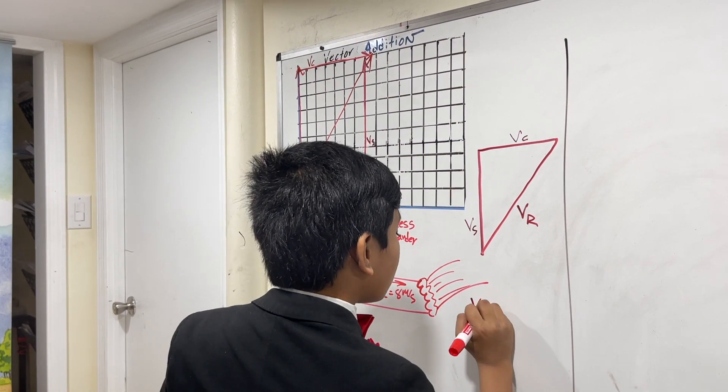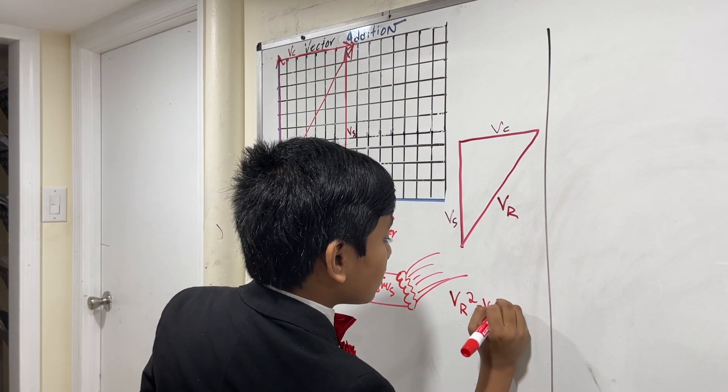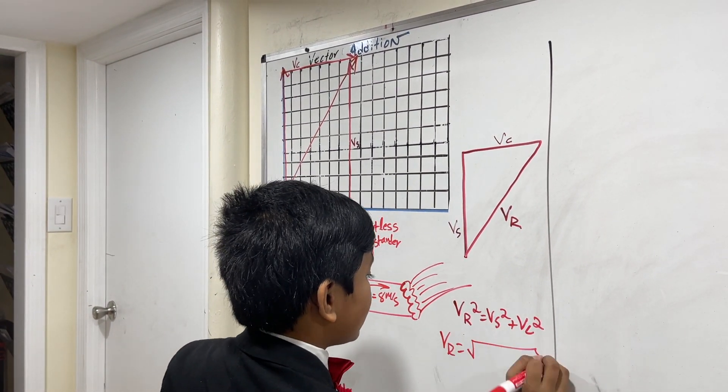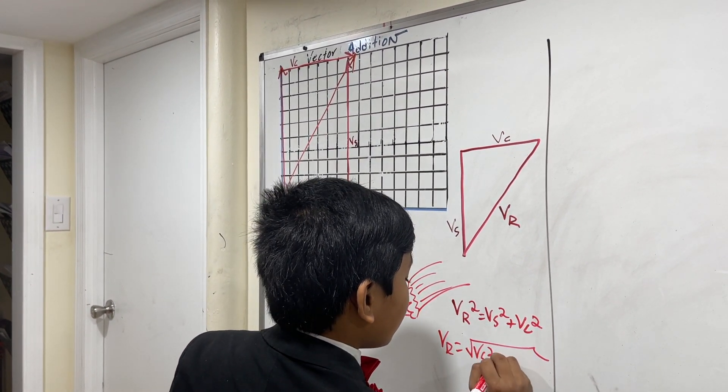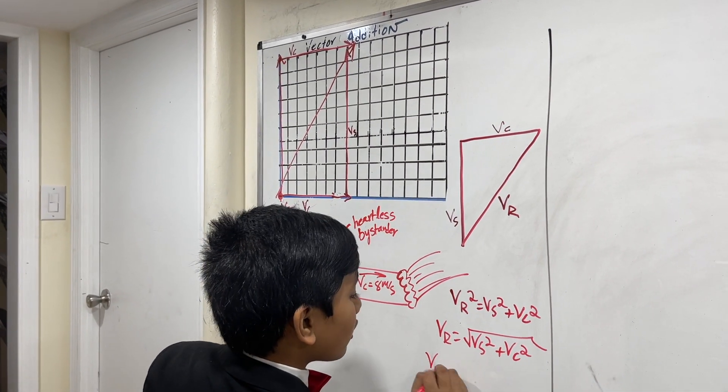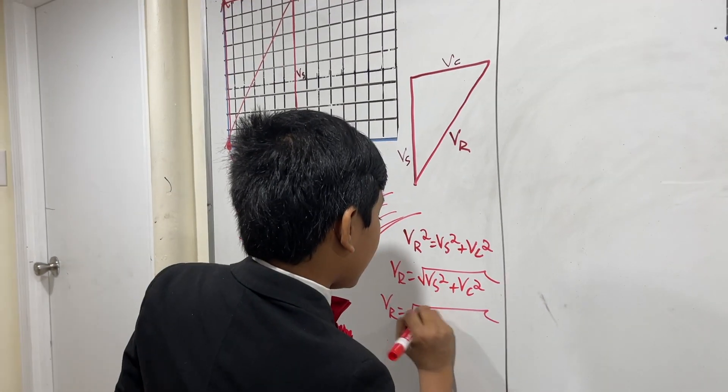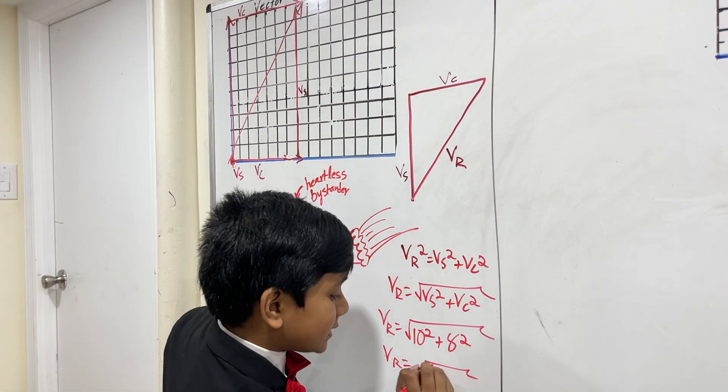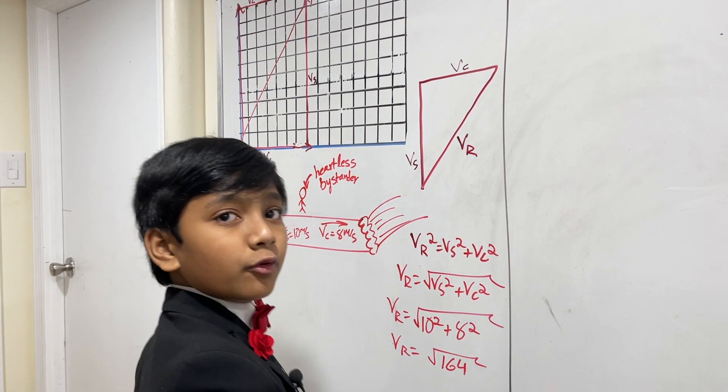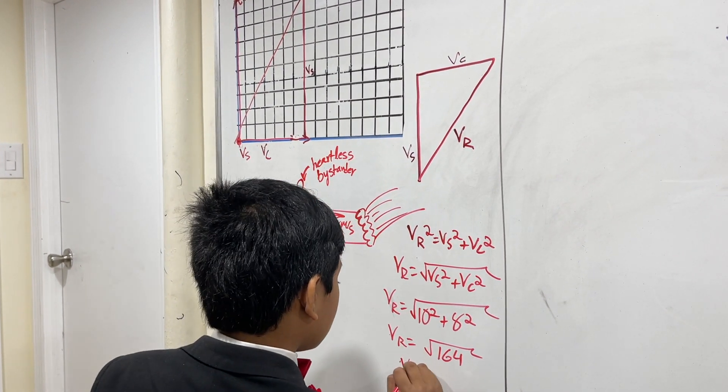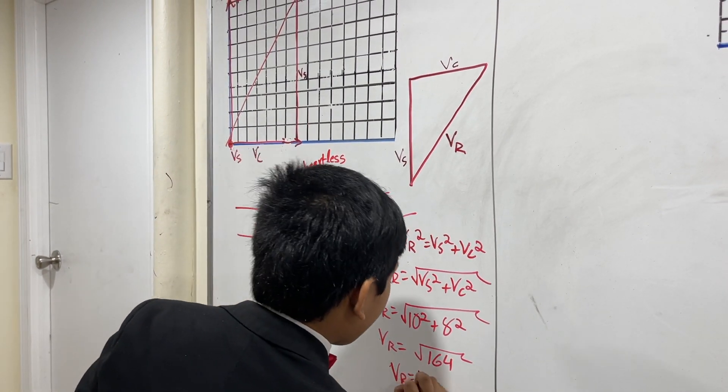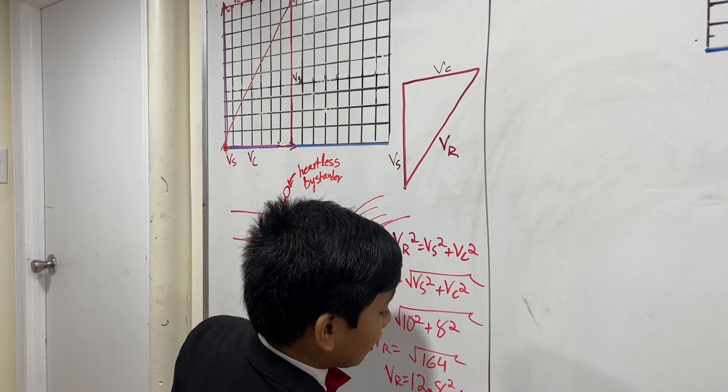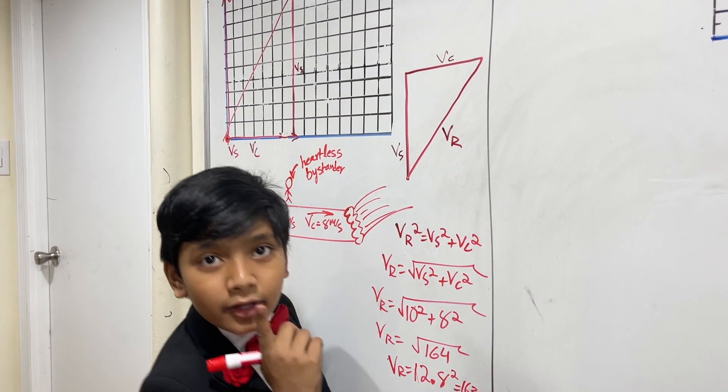Well, V R squared is equal to V S squared plus V C squared. So, V R is the square root of this. So, now, we get V R is equal to the square root of 10 squared plus 8 squared. 10 squared is 100, and 8 squared is 64. So, this is the square root of 164, which is 12.8. Well, approximately 12.8, because 12.8 squared is actually 163.84, but we ignored that part.